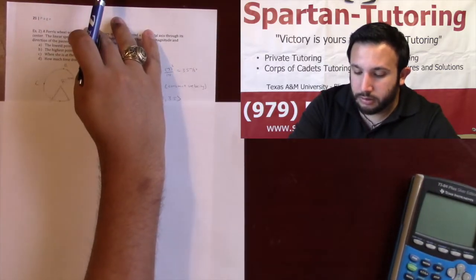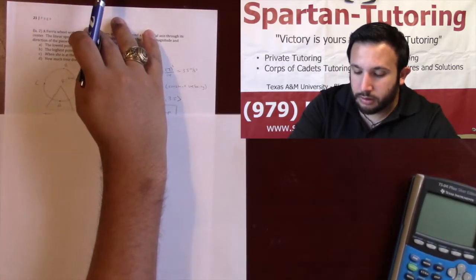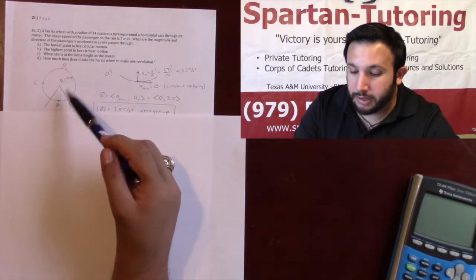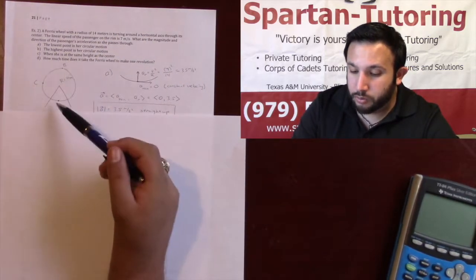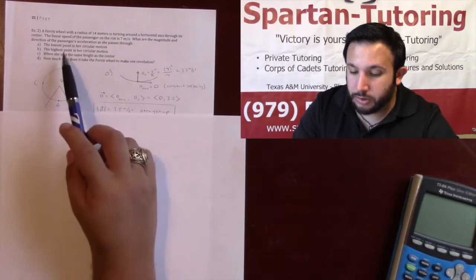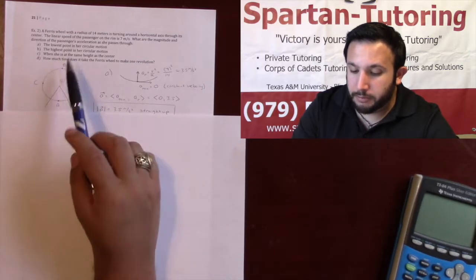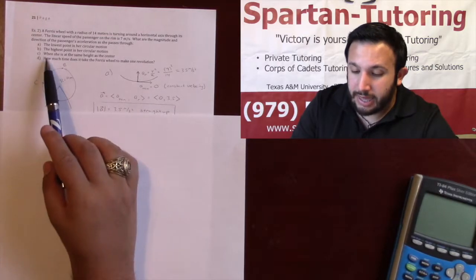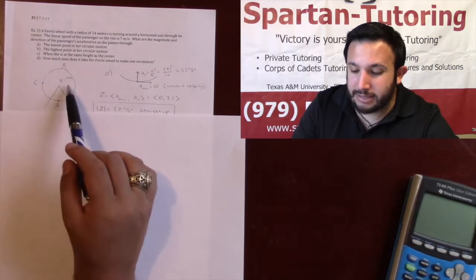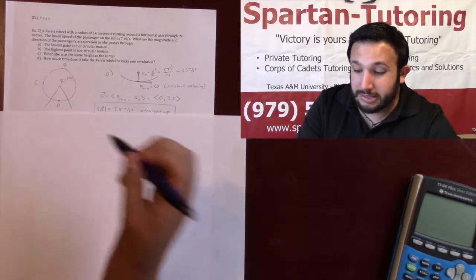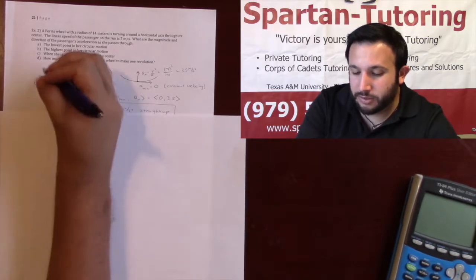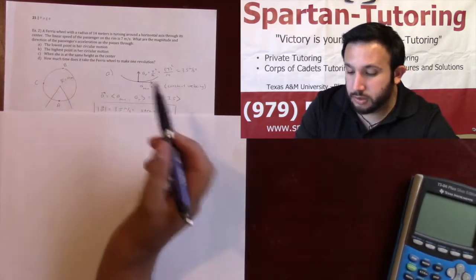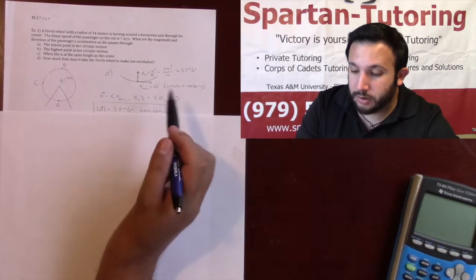The way I drew this wasn't the prettiest of ferris wheels, but Part A is at the lowest point of her circular motion, Part B is at the highest point, and Part C is when she's at the same height as the center. Here is my attempt at a ferris wheel — you're just moving around in a circle. So let's find our radial acceleration.